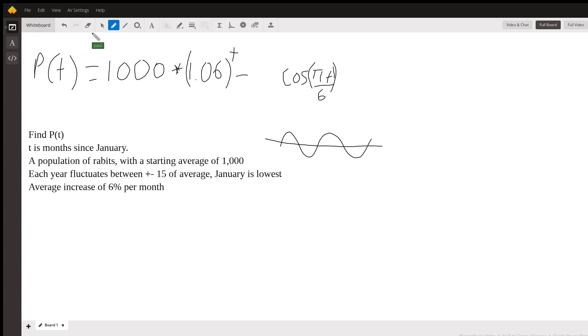And obviously, since cosine fluctuates between 1 and negative 1, and we want this fluctuation to be between 15 and negative 15, we're going to multiply this cosine term by 15. And so, this should be the final answer to that question.